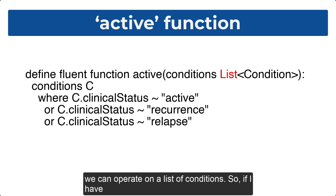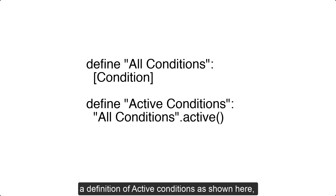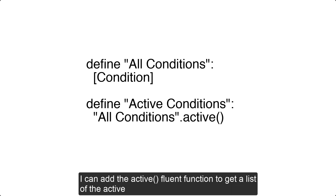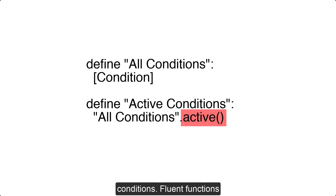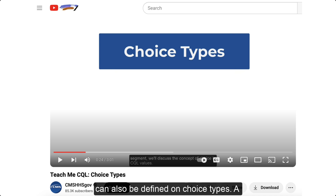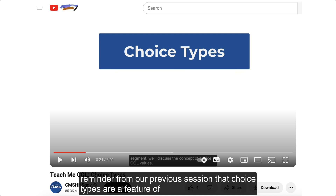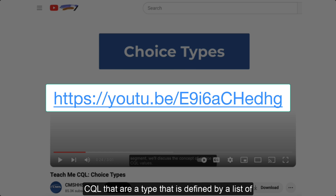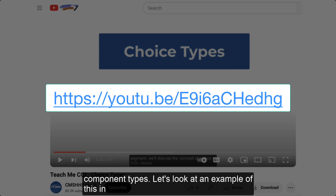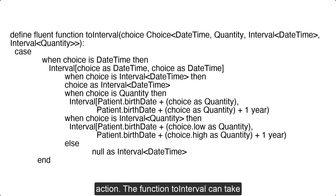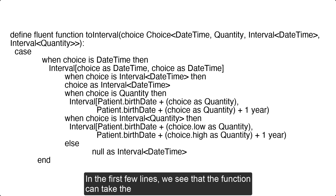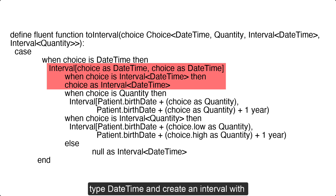With this function, we can operate on a list of conditions. So if I have a definition of active conditions, as shown here, I can add the active fluent function to get a list of the active conditions. Fluent functions can also be defined on choice types. A reminder from our previous session that choice types are a feature of CQL defined by a list of component types. The function to interval can take several choice types and convert to an interval. In the first few lines, we see that the function can take the type date time and create an interval with a start and end point that equal the date time.